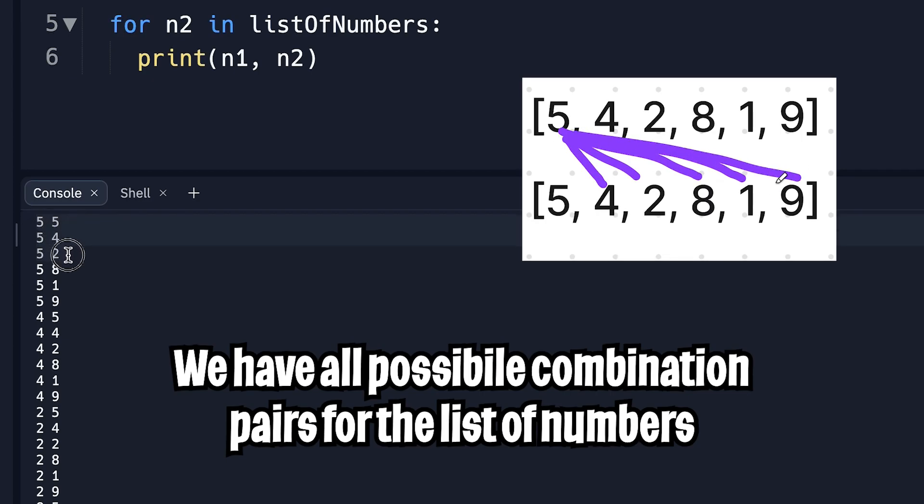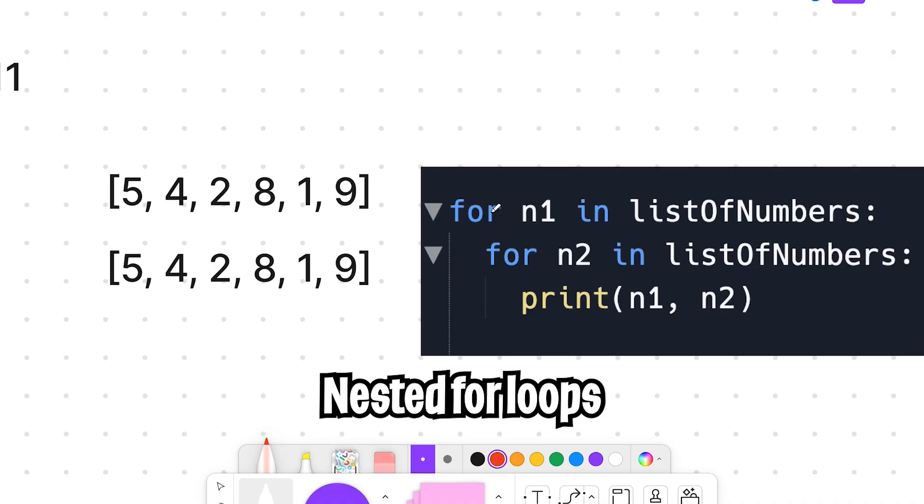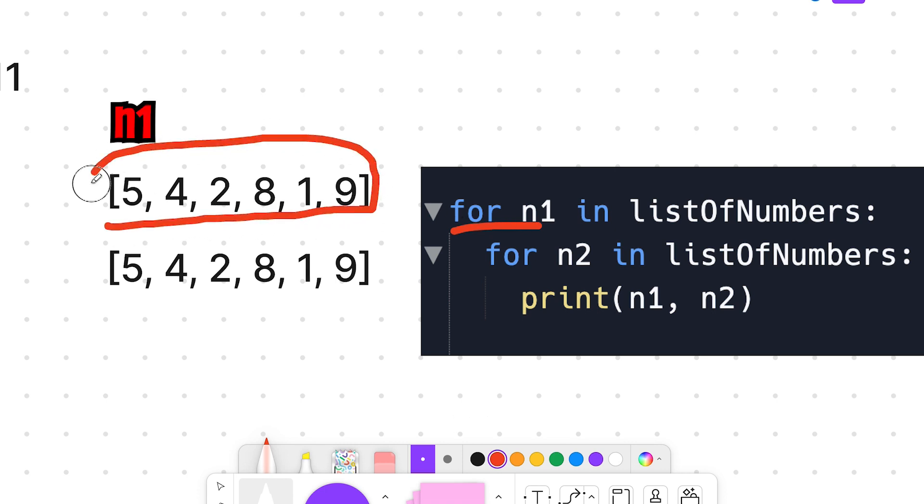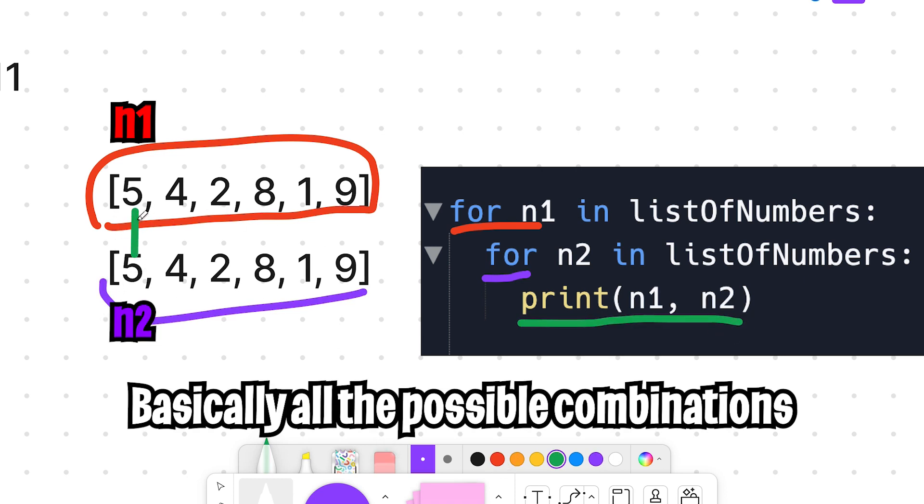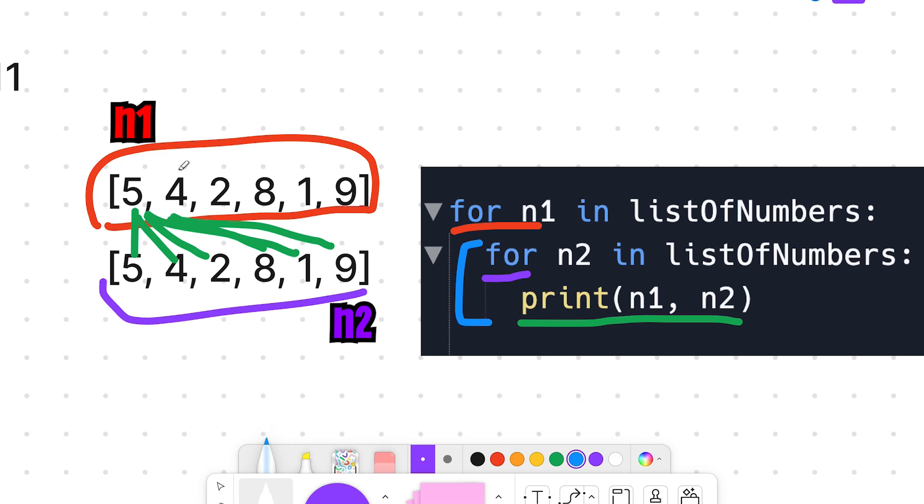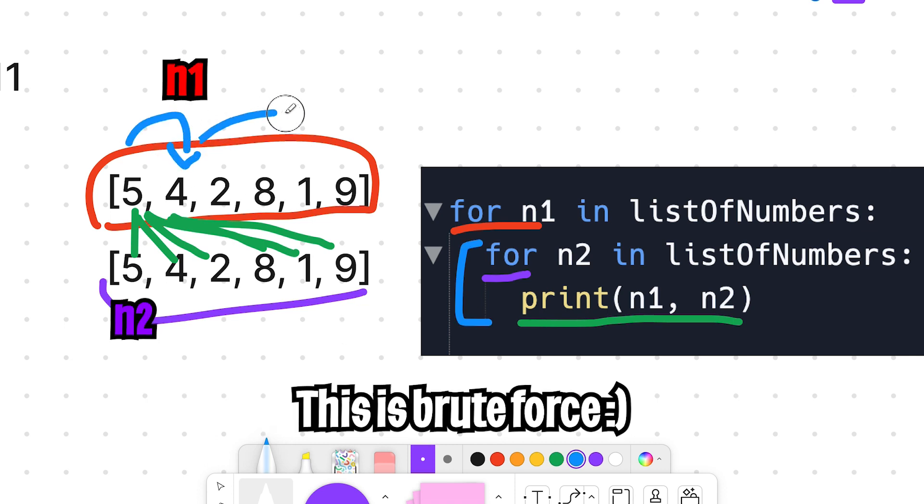And as you can see, we've got 5 5, 5 4, 5 2, 5 8, 5 1, 5 9, which basically goes through each combination starting with 5. So I didn't really explain nested for loops before, but just to help you guys visualize, this first for loop here basically corresponds with this first list, and the second for loop corresponds to this list here. So basically, when we do print N1 and N2, we're basically printing 5 5, 5 4, 5 2, 5 8, 5 1, 5 9. And once this loop finishes, we move forward to the next number, which is 4, and we keep doing this until we reach the end of the list.